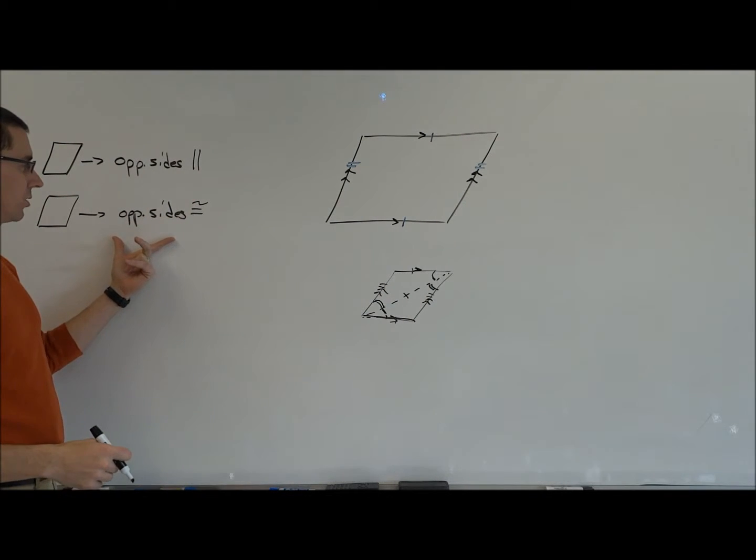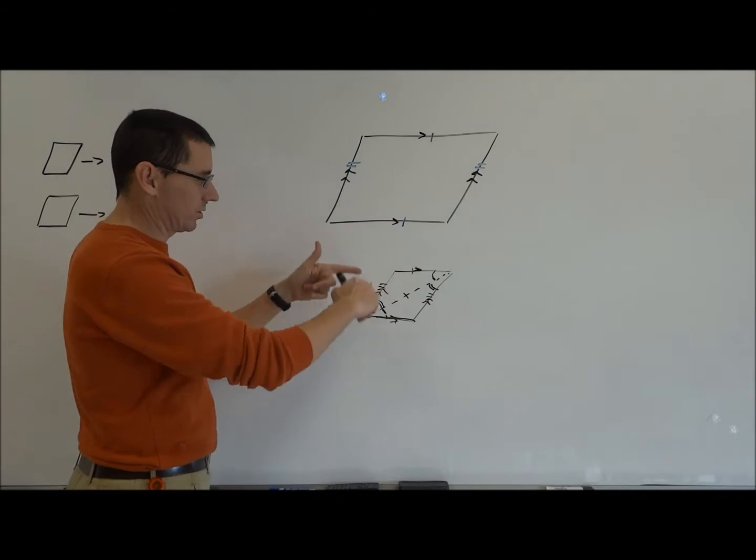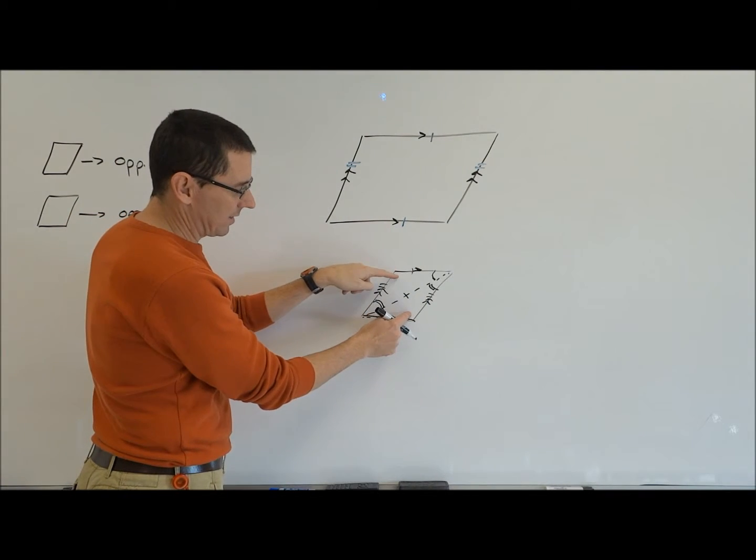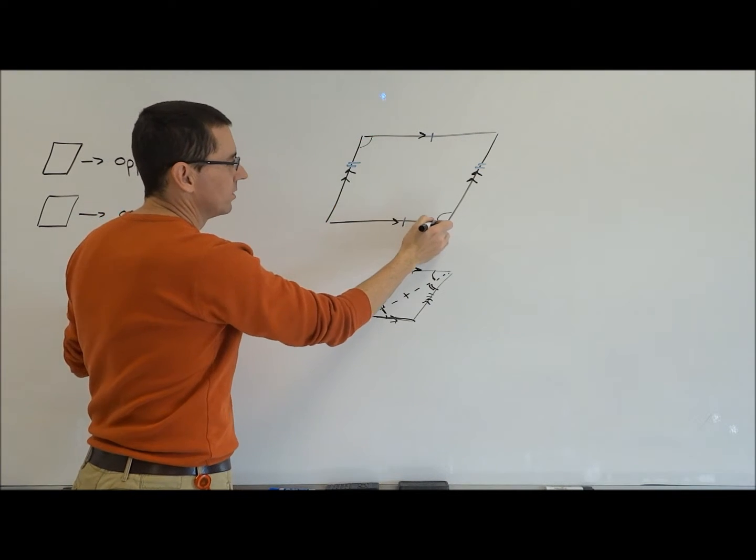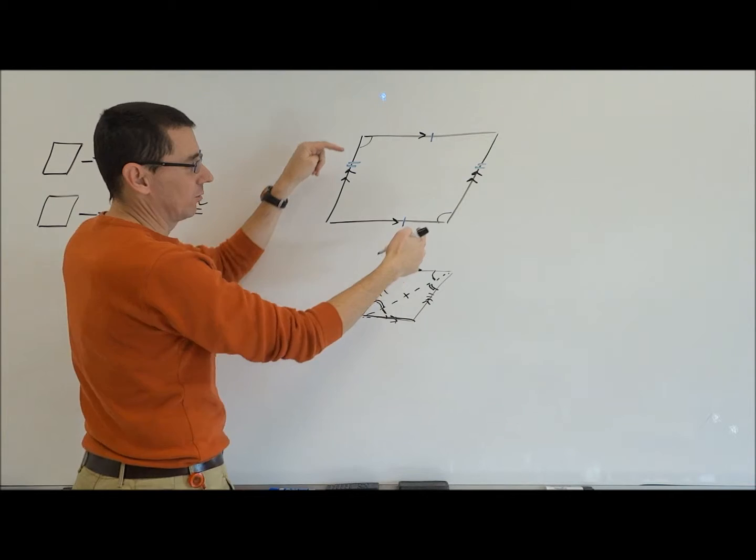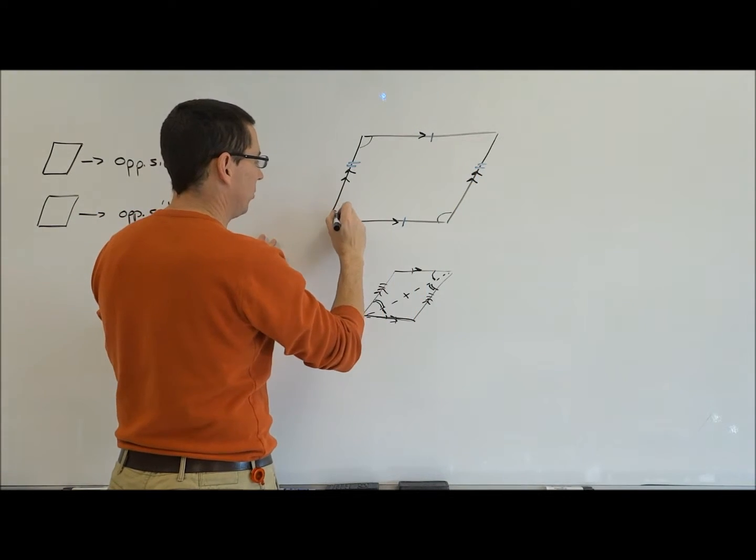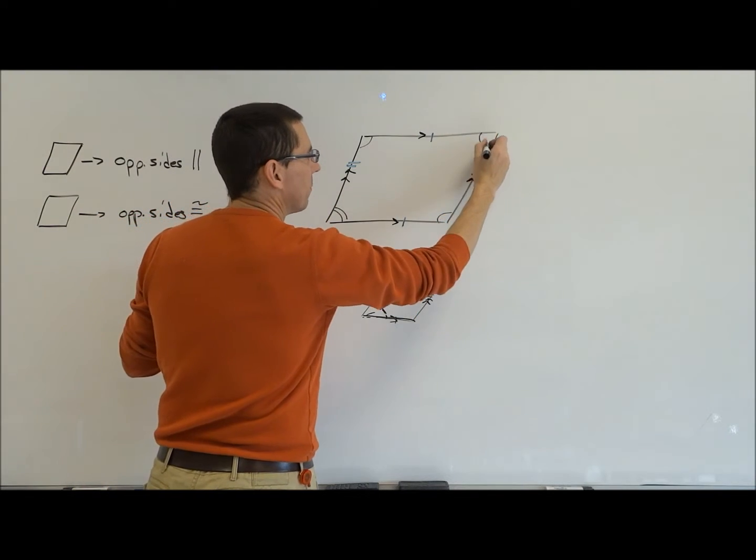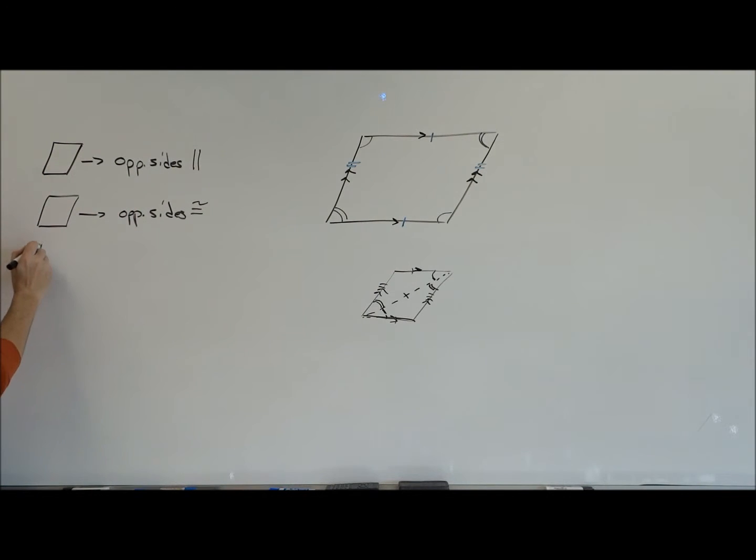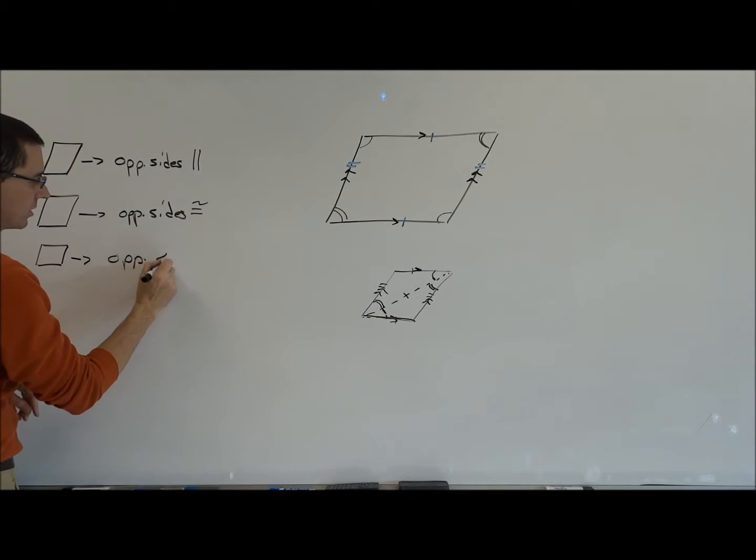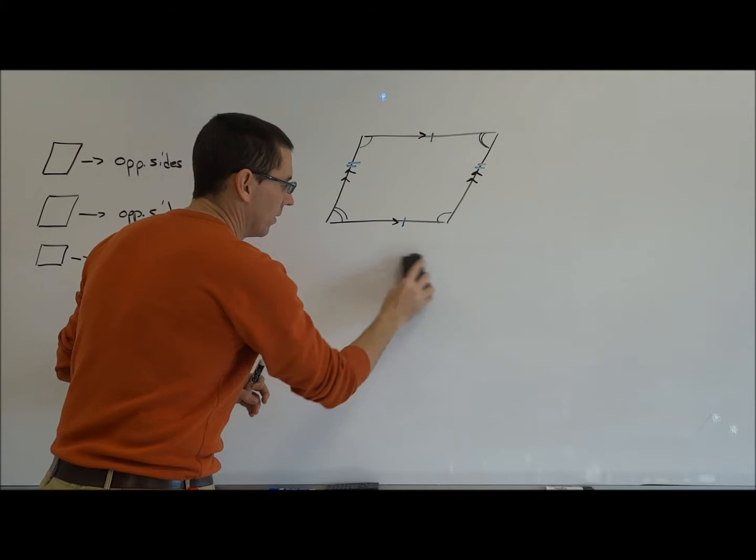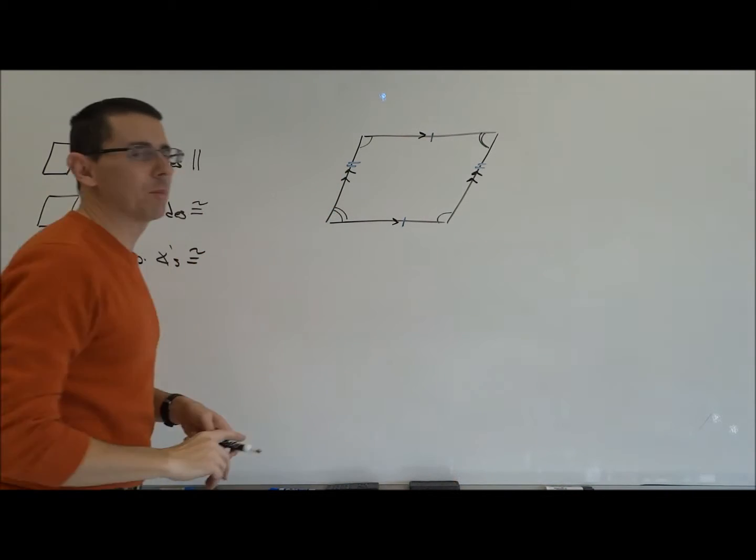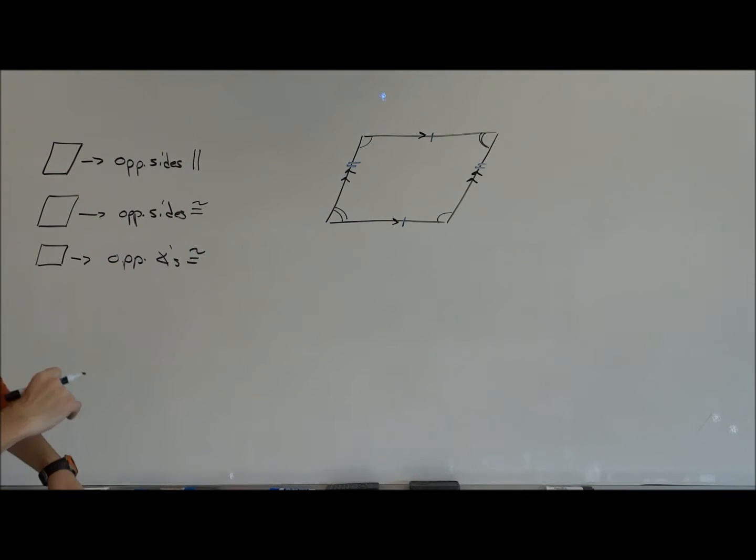I could also, in this case, the way we just proved them, use CPCTC to get these two angles equal to each other. Just like we have opposite sides, we have something in a parallelogram called opposite angles. And we would be able to show that both pairs of opposite angles are congruent. So, parallelogram implies opposite angles congruent. So, we've got opposite sides parallel, we've got opposite sides congruent, opposite angles congruent.